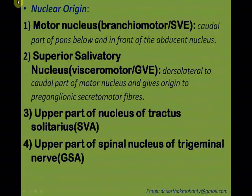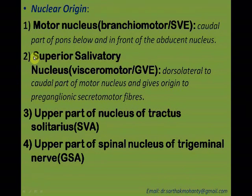These four components originate from four different nuclei in the brain. The branchial motor component originates from the motor nucleus. The visceral motor component originates from the superior salivatory nucleus. The special sensory component originates from the upper part of the nucleus of tractus solitarius. And the general somatic component originates from the upper part of the spinal nucleus of the trigeminal nerve.